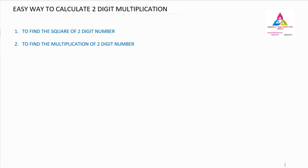Welcome to PSM, Perfect Solution for Maths. In today's video, we are going to learn some mathematical calculations using a simple and easy method. We will cover two topics: finding the square of a two-digit number, and finding the multiplication of two two-digit numbers. Both can be solved using just one method, which makes it interesting.